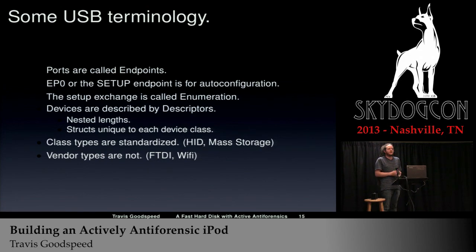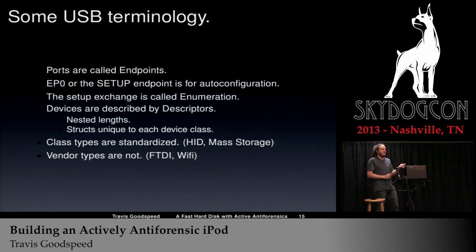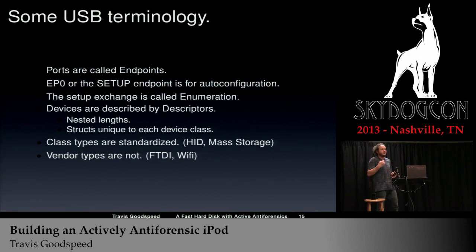This setup exchange is called enumeration. Enumeration is done by sending descriptors, and descriptors are great if you want to break things because descriptors use nested length fields, which means it's often possible to make a descriptor longer than itself. You can make a little interior part longer than the entire thing, which allows you to read or write off the end — giving you memory corruption, and through memory corruption, code execution on the host. These structures are unique to each device class, so weirder devices have weirder descriptors, which means less-tested code and better targets for fuzzing.